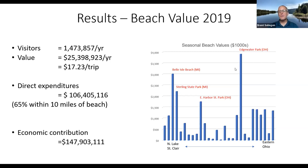The figure on the right shows the big beaches with the most visitation: Edgewater in Cleveland, Belle Isle in Detroit, Sterling State Park in Michigan, and East Harbor — two state parks in Ohio and one in Michigan, as well as ones closer to large urban areas. You can see from Lake St. Clair to eastern Ohio the amount of value at each beach, really correlated with visitation, although there are some differences in per-trip values as well.